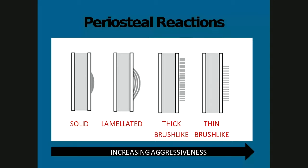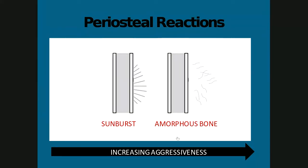We revisit the different types of periosteal reactions covered in more detail in the osteomyelitis lecture. To summarize: thick and thin brush-like periosteal reactions are more aggressive, up to sunburst and amorphous new bone, and these are typically the ones seen with neoplasia.